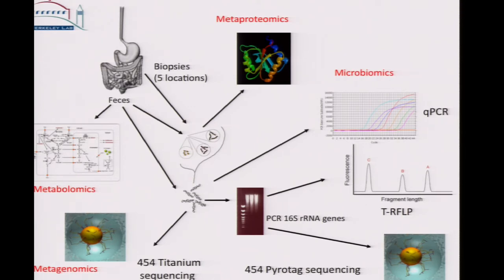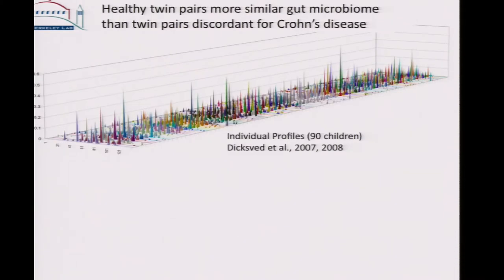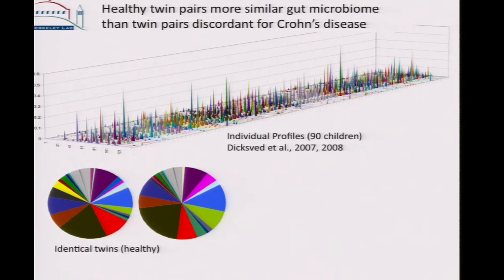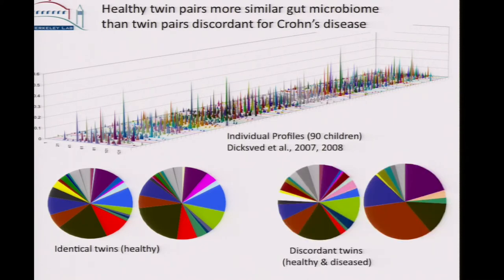For the microbiome, we started with a fingerprinting method called TRF-LP, used qPCR, then moved to pyrotag sequencing and metagenome pyrotag sequencing, followed by shotgun proteomics and metabolomics. The TRF-LP profile survey of 90 different children showed that every single child had an individual fingerprint. But when we looked at identical twins, it was amazing — they were so similar, even adults who had lived apart for decades. Their TRF-LP profiles of fecal samples were very, very similar. By contrast, discordant twin pairs had very different fecal microbiomes — an indication that there is a dysbiosis, something different in those individuals.